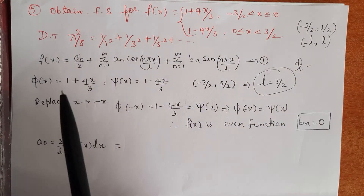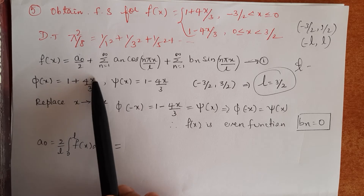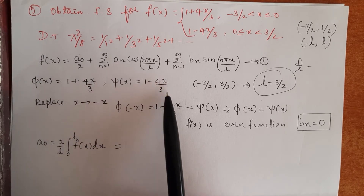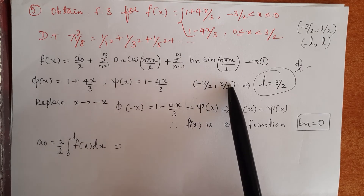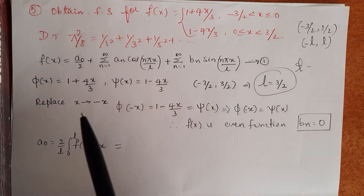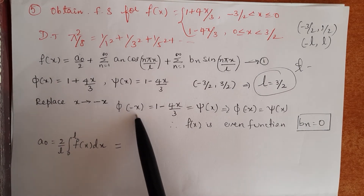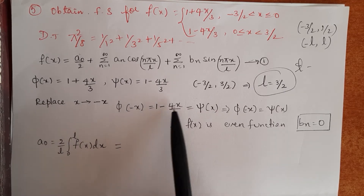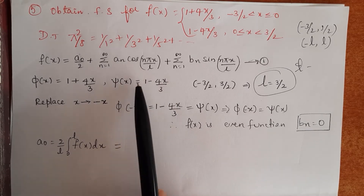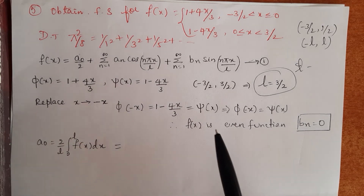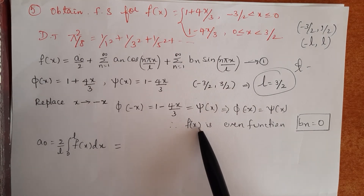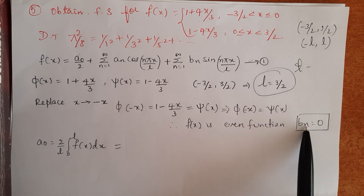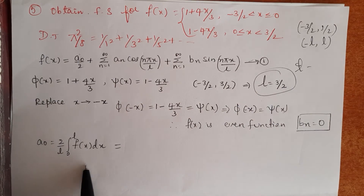Since we have split functions, I take the first function phi(x) equals 1 plus 4x by 3, and the second function psi(x) equals 1 minus 4x by 3. To verify the nature, since the interval is minus 3/2 to plus 3/2, I replace x by minus x in the first function: phi(minus x) equals 1 minus 4x by 3, which is exactly our second function psi(x). So phi(minus x) equals psi(x), which concludes that f(x) is an even function. Therefore bₙ equals 0, and we calculate a₀ and aₙ.